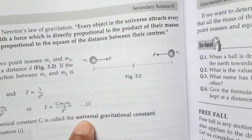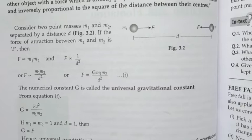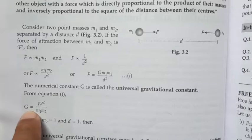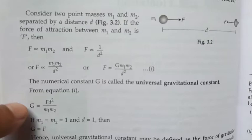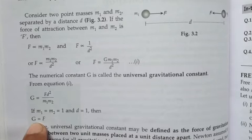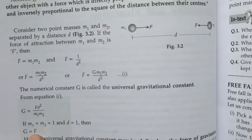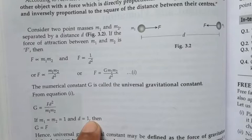The gravitational constant G can be derived from the force equation. Rearranging gives G equals F times d squared divided by m1 times m2. When m1 equals m2 equals one and distance equals one, then G equals F.